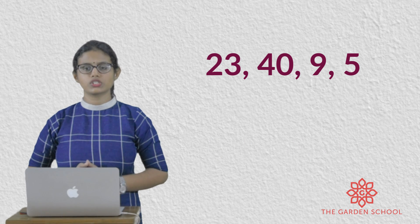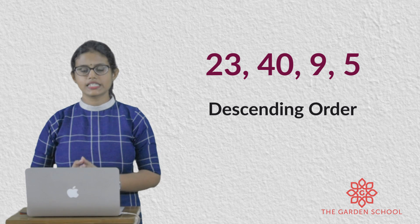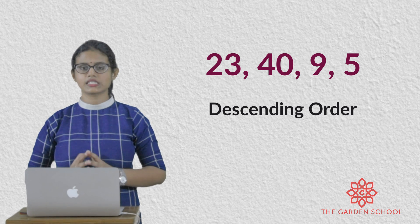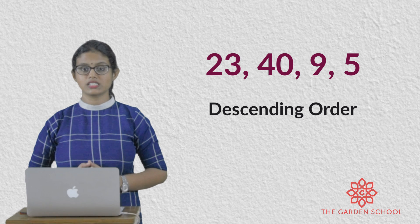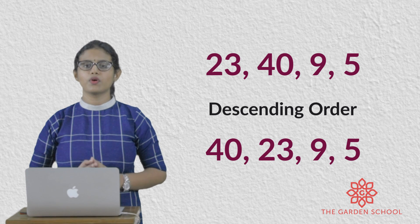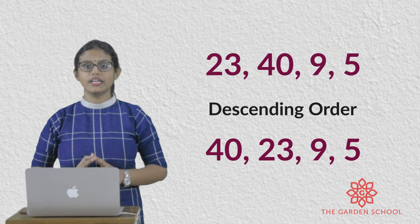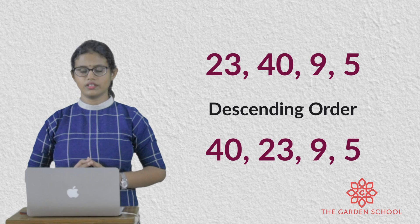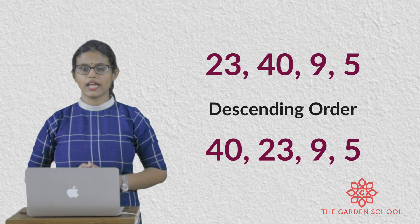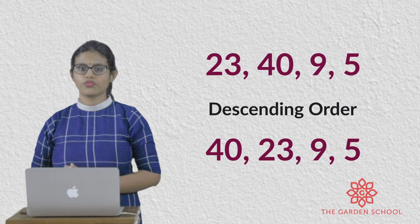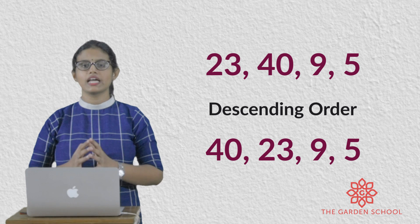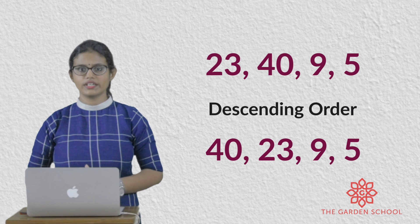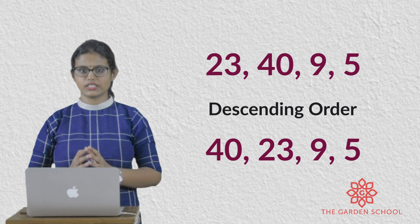Can we arrange the same numbers in descending order? In descending order, which number comes first? The biggest number — that is 40. Then 23. Then 9. And then 5. This is about ascending order and descending order.